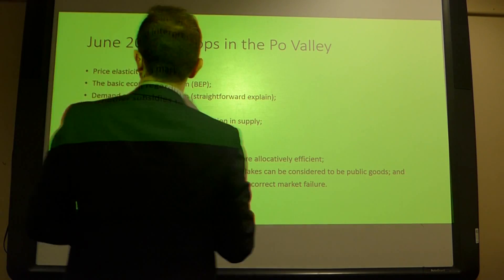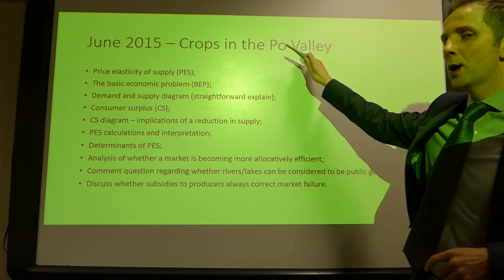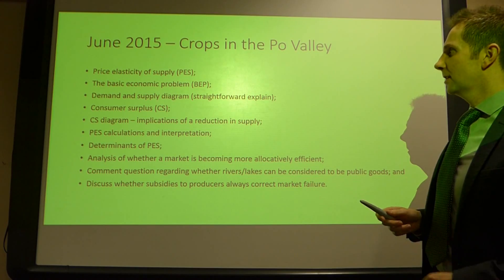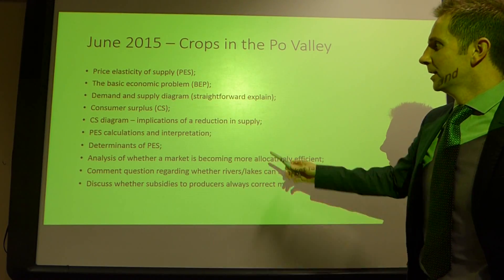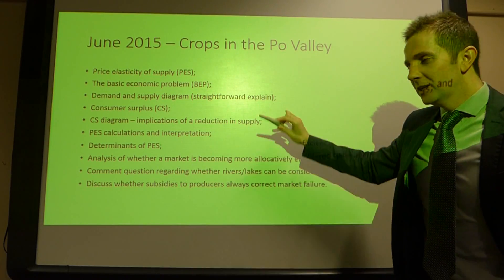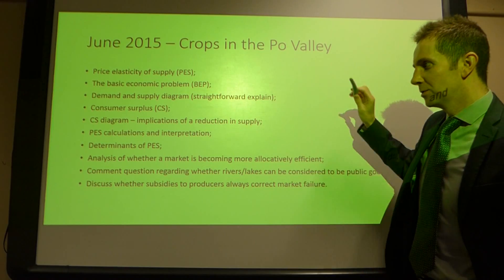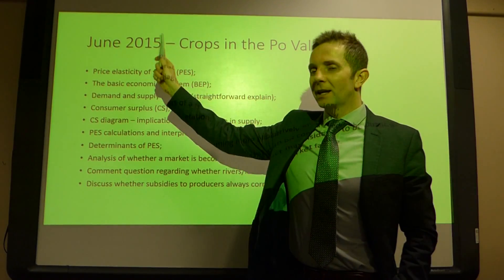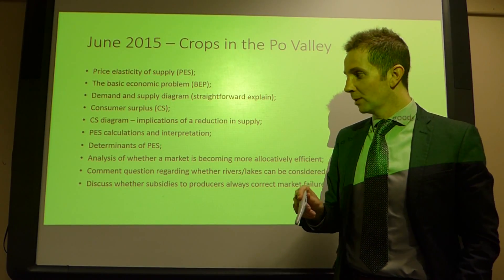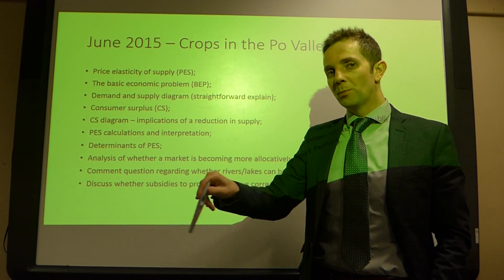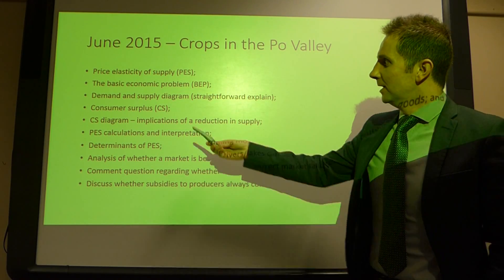If we look at the June 2015 paper, this paper was all about crops in the Po Valley in Italy. These are the general areas of assessment on that particular paper. You can get copies of mark schemes and papers on the OCR website, though you won't be able to get a copy of the June 2015 exam paper there. I'll put a Dropbox link in for you where you can pick that up along with a copy of the mark scheme.